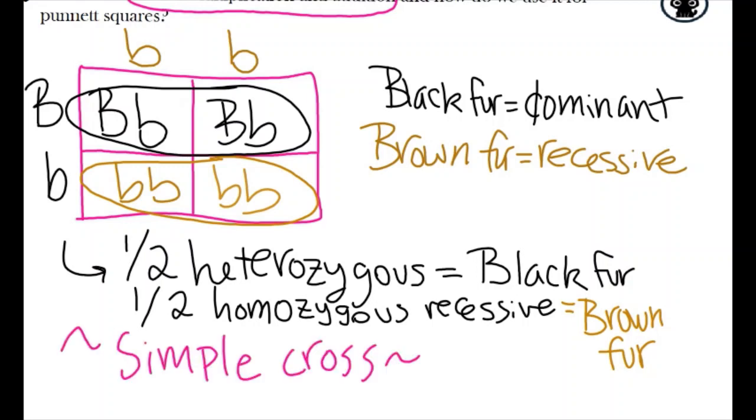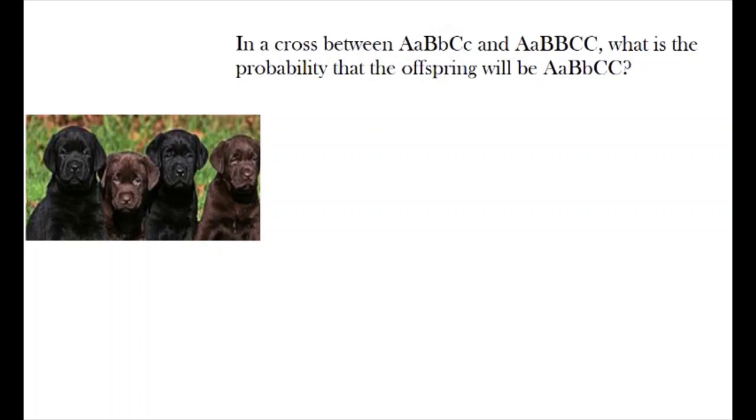Now that was a simple cross, and for that, writing a Punnett square is a very quick and easy tool to use. But let's say we have a more complex question like this. In a cross between a dog with this genotype and another dog with this genotype, what is the probability of the offspring will be capital A, lowercase a, capital B, lowercase b, and capital C, capital C?